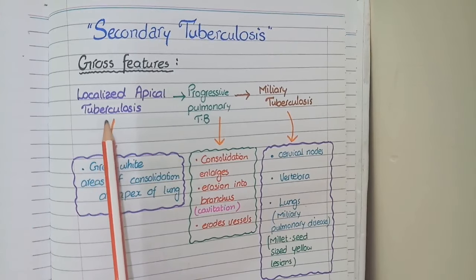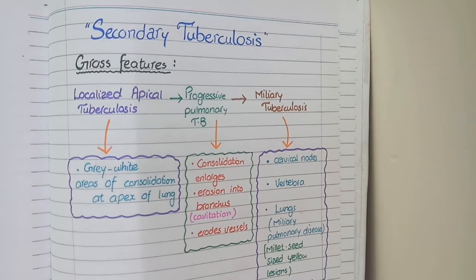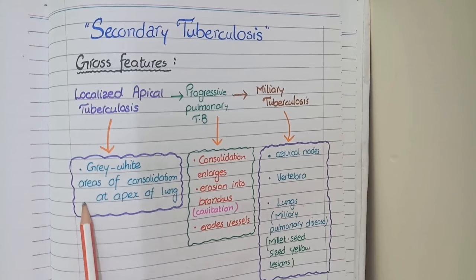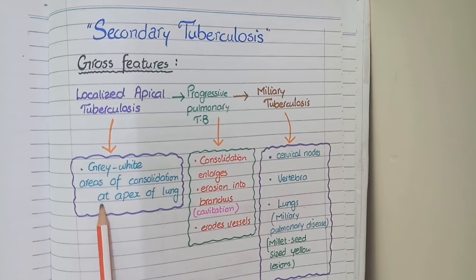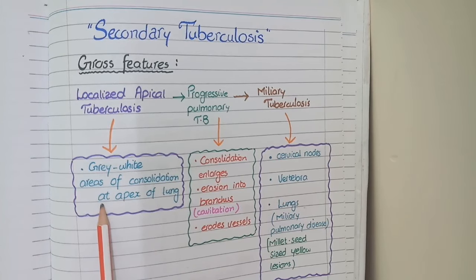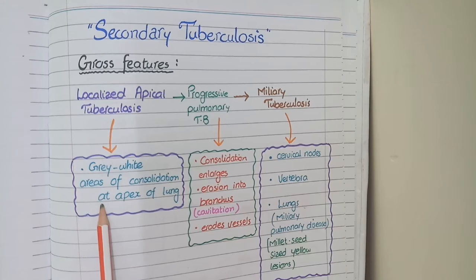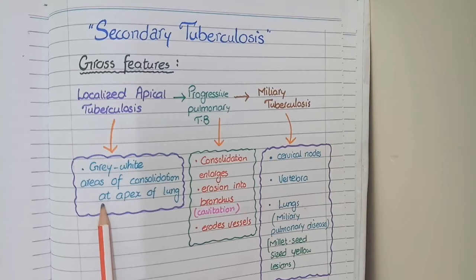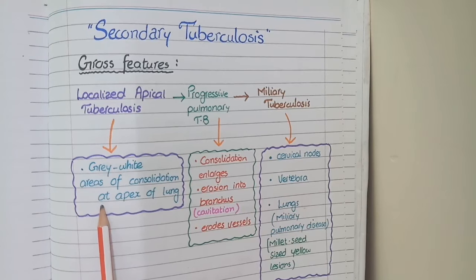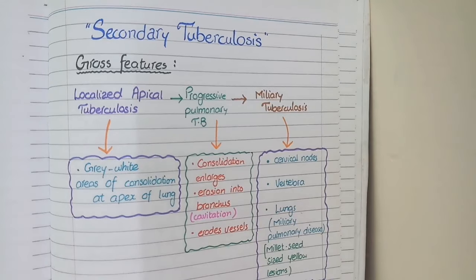The first one is localized apical tuberculosis in which there is grey-white consolidation at the apex of lungs. This is different from primary TB where infection causes consolidation nearly at the center or lower poles. But in cases of secondary tuberculosis at localized apical stage, the consolidation occurs at apical regions of the lungs.